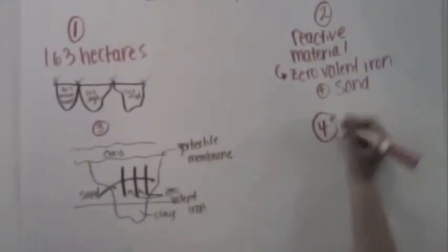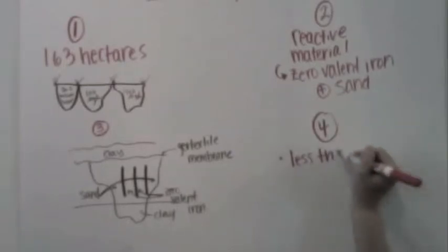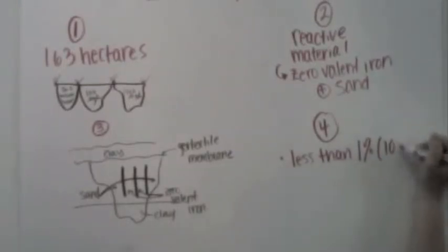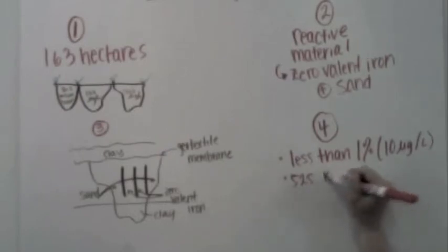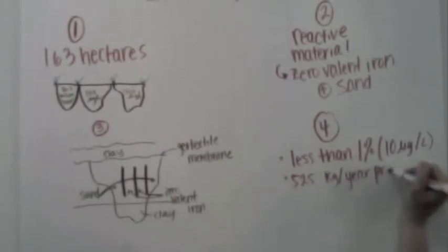In total, 38 tons of iron material were used. The resulting uranium concentrations in the water after it had passed through the PRB were measured to be less than 1% of the concentrations upstream.